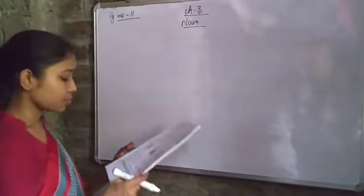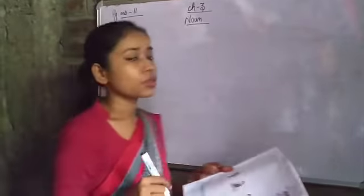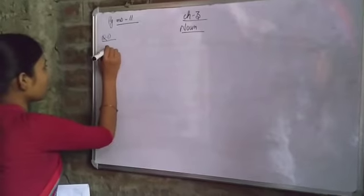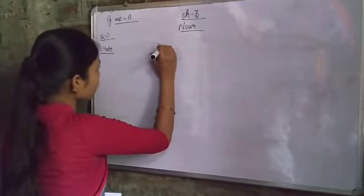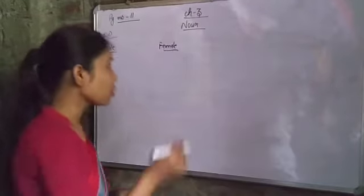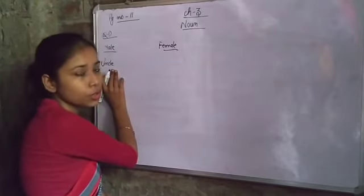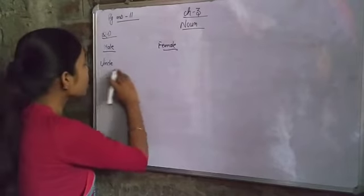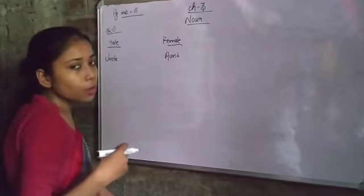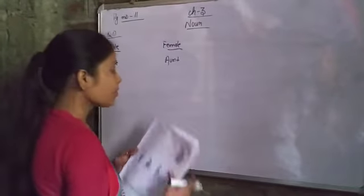Now we also have to do Question D. In this noun chapter we got to know about gender. We have to fill in the correct nouns to complete the table with male and female columns. For example: 'uncle' is a common noun that shows masculine gender, and its feminine form is 'aunt.' Aunt is also a common noun showing feminine gender.